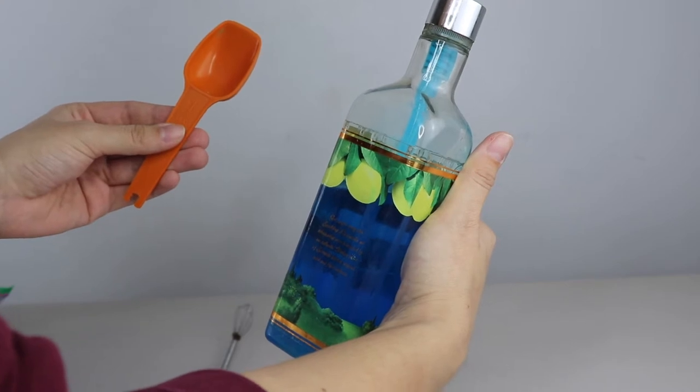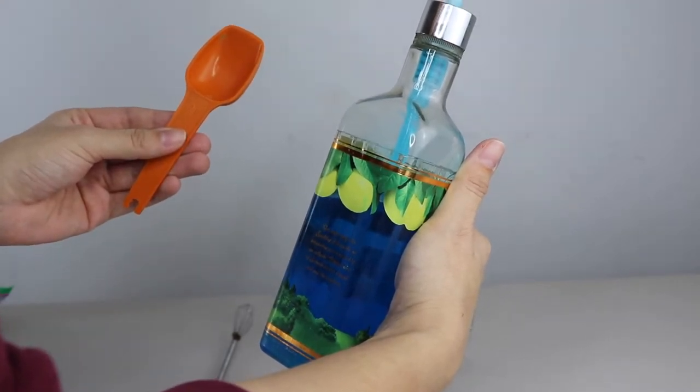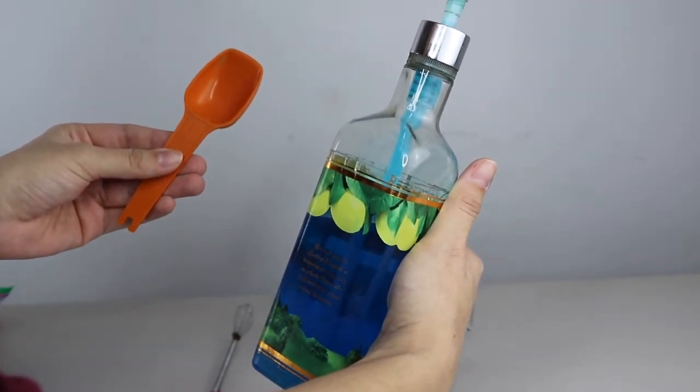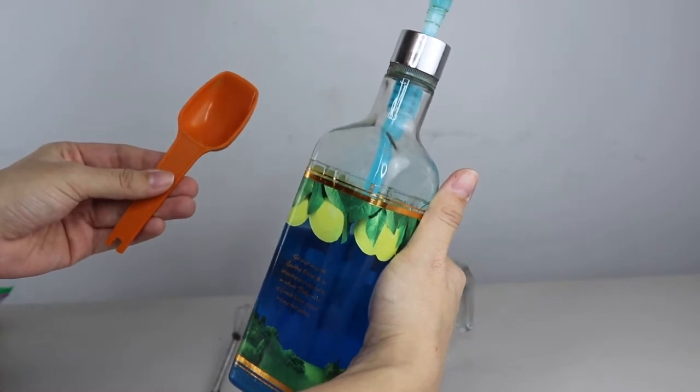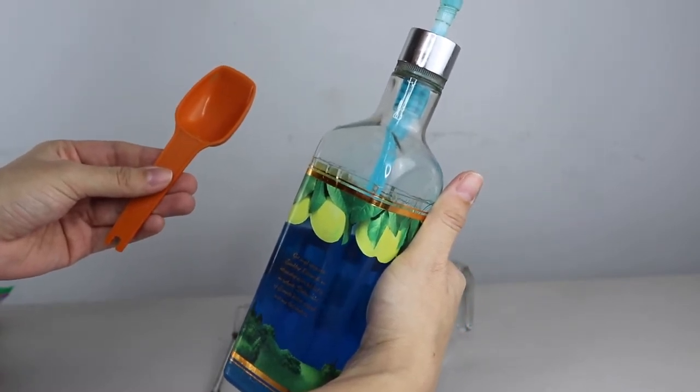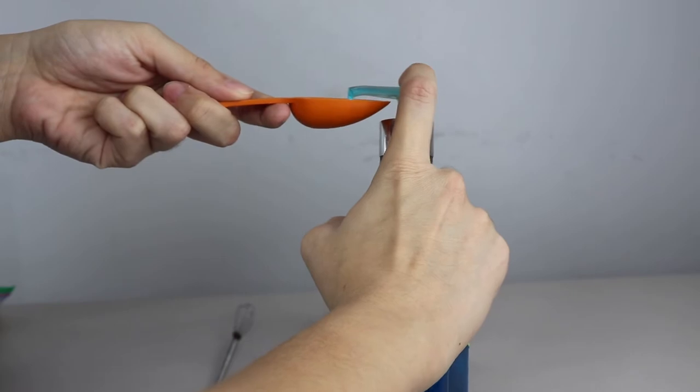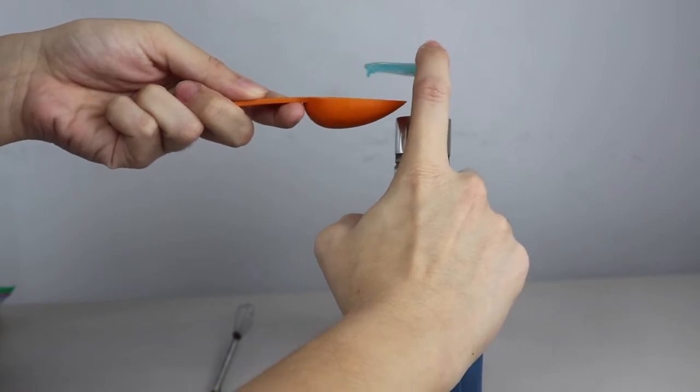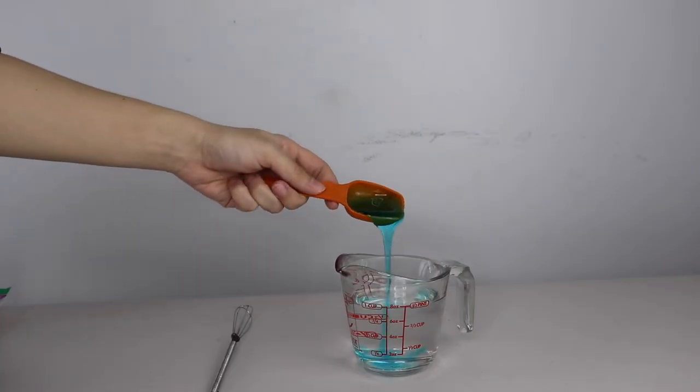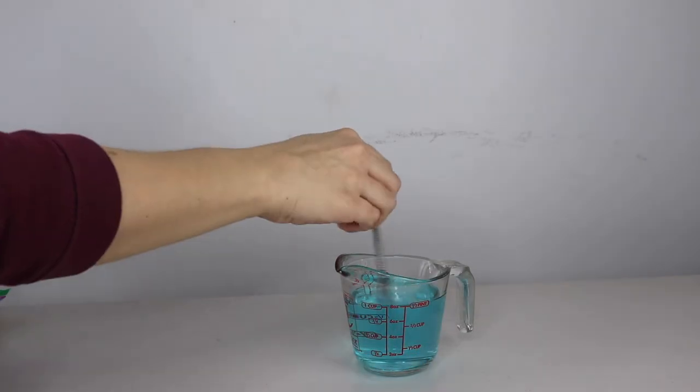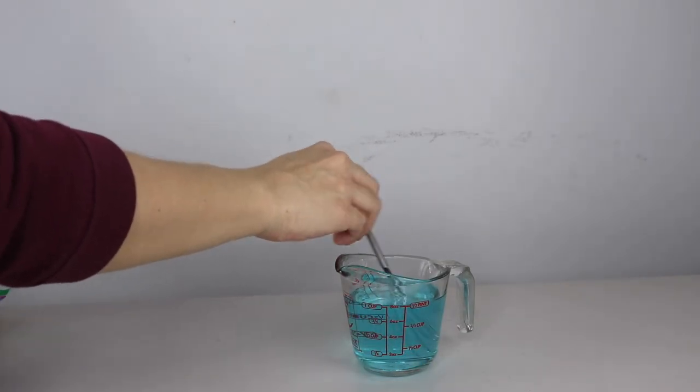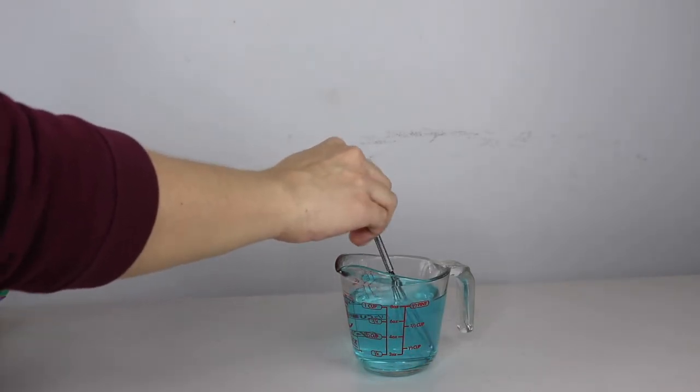Okay, so now I'm going to take a tablespoon of the Dawn dishwashing liquid and combine that with the isopropyl alcohol. Mix until thoroughly combined.